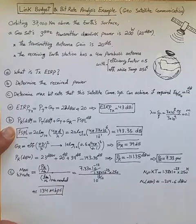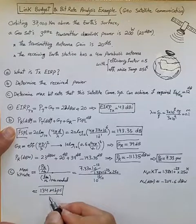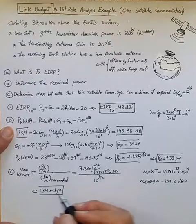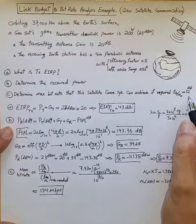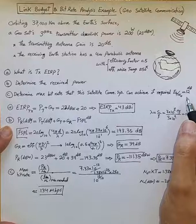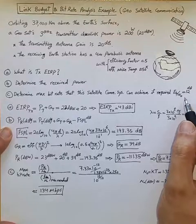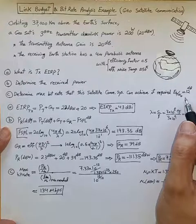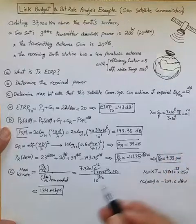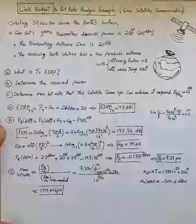This system can achieve up to 134 megabits per second while satisfying the required Eb/N0 of 12 dB, which is a function of what sort of modulation and code rate, or ModCod, is targeted for this system. Hope this helps.